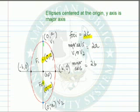The distance from one vertex to another, which occurs along the major axis, this distance is 2a, which allows us to label this point (0, a) and this point (0, -a). And lastly, we have a minor axis, which is 2b in length. And that allows us to label this point (b, 0) and this point (-b, 0).